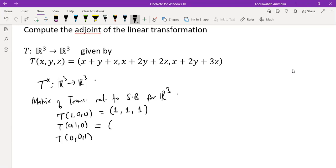Now for T of (0,1,0), it means our y is 1, x is 0, and z is 0. We basically have the first component to be 1, second component to be 2, and third component to be 2. And for the last one, when z is 1 and the rest is 0, we have 1 in the first component, second component we have 2, third component we have 3.